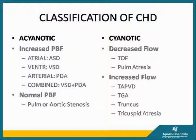Heart disease is classified as cyanotic and acyanotic. And within each subgroup — acyanotic and cyanotic — there is an increased pulmonary blood flow and a normal or decreased pulmonary blood flow.